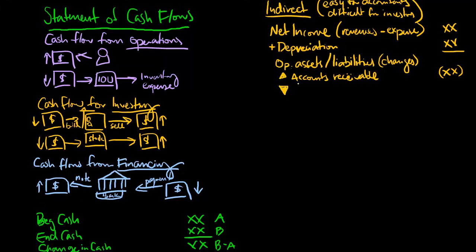If we have a reduction in an asset — say inventory — and our total inventory from the beginning of the year goes down, that means we have sold more inventory and collected additional cash for that inventory, so that will have an increase in our cash flows. So with our assets: if we have an increase in an asset, then cash flows will go down; if we have a decrease in assets, then our cash flows will go up. They move in opposite directions.